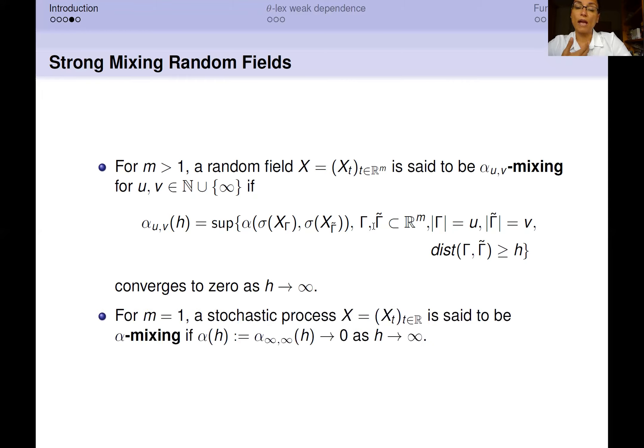In the case in which M is equal to one, a stochastic process X is said to be typically just α-mixing. And when we use this notation, we refer typically to the coefficient α(∞,∞)(h). Also in this case, a process is said to be α-mixing if this coefficient goes to zero as h goes to infinity.